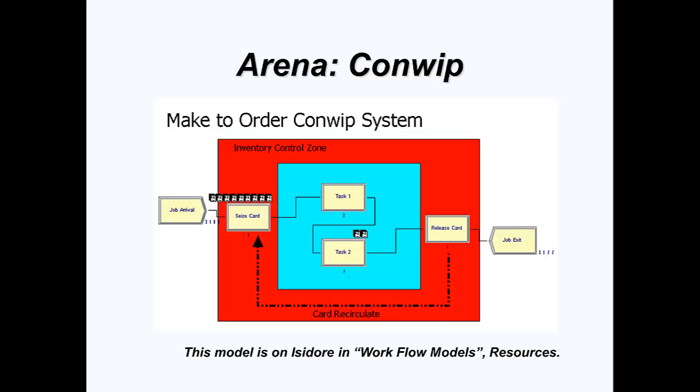Each of these systems may be modeled in Arena discrete event simulation. In this model, a ConWhip make-to-order system is implemented. The light blue area is the zone of flow control. Cards are modeled as additional resources that the entity must seize to enter the zone of control and release upon exiting the zone of control.